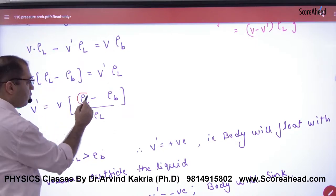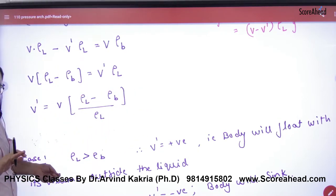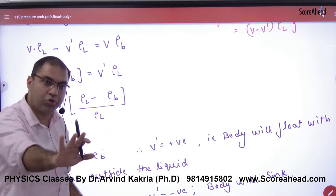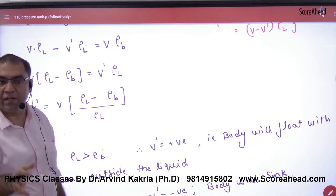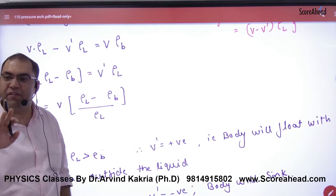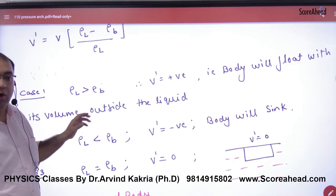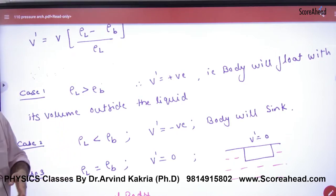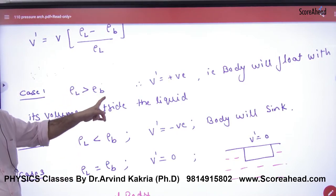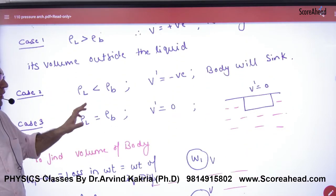And if these two will be together, so what will V dash? Zero. So that means the body will either go down or go up wherever you leave, either sink or float. Clear? But yes, the surface will not come up. So this is written. And we do this in the small class. If the density of liquid is bigger then the body will float. If it is small then it will sink.